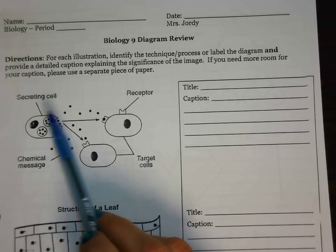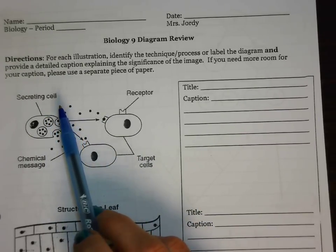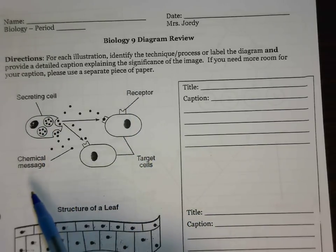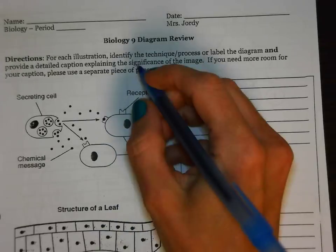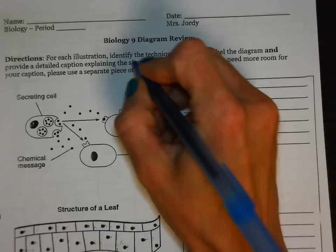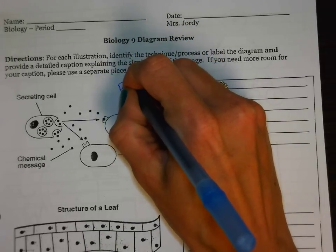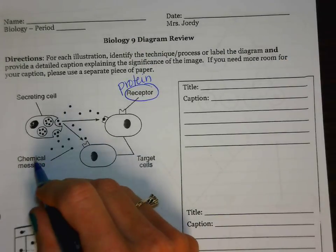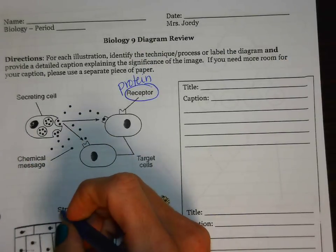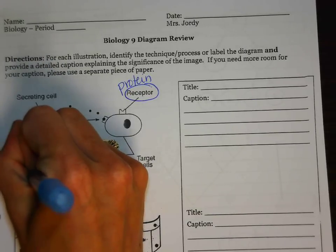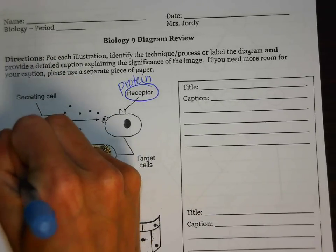What we want to do is evaluate what's actually in the picture. We have our secreting cell, our receptor, our target cells, and our chemical message. Probably the thing that really sticks out here is the receptor — remember, a receptor is going to be a specifically shaped protein located on the cell membrane. The chemical messages we talked about this year were hormones and neurotransmitters.